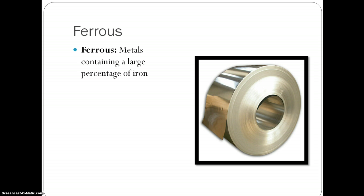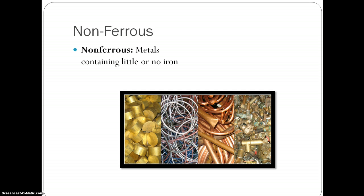Ferrous metals are metals that contain a large percentage of iron. Here's a picture of a non-ferrous metal. And this is a non-ferrous metal. It's a metal containing little or no iron. So, do you see the color difference? Perfect!